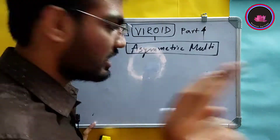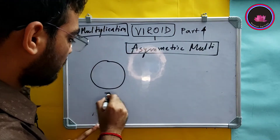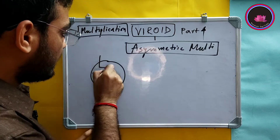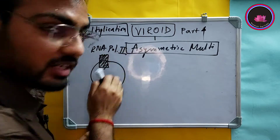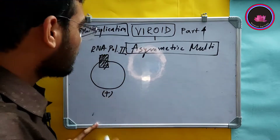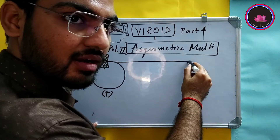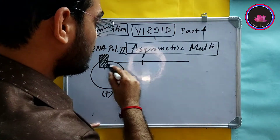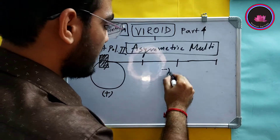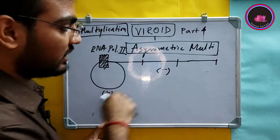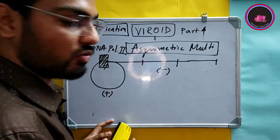For asymmetric multiplication, this is the positive strand and RNA polymerase 2 is used — not RNA polymerase 3. Due to the presence of RNA polymerase 2, it produces concatemeric RNA because it has the same copy multiple times. This will be negative because the original is positive, and due to replication it becomes negative. So in asymmetric multiplication, after producing the negative strand, the process continues.